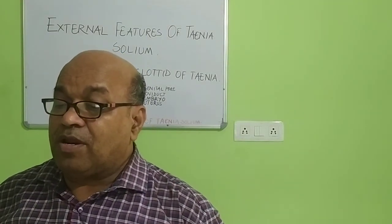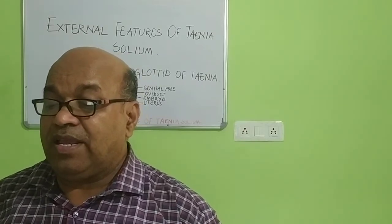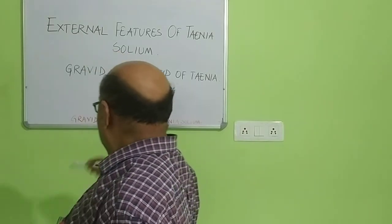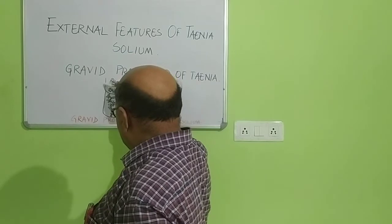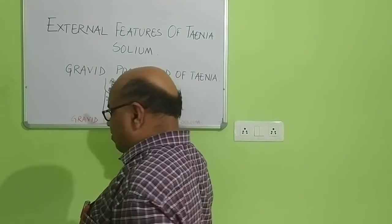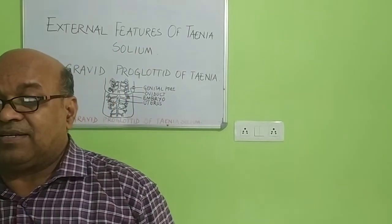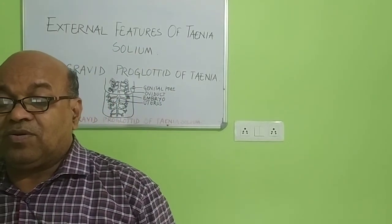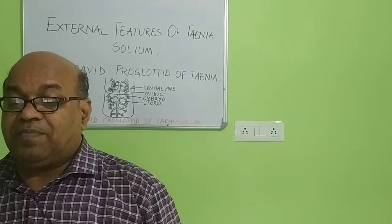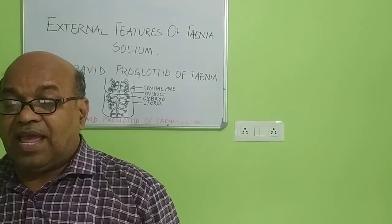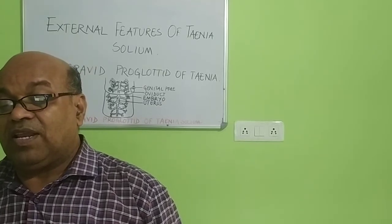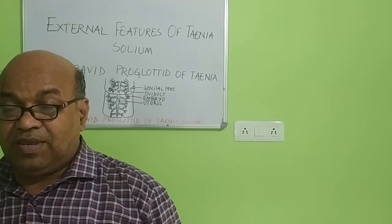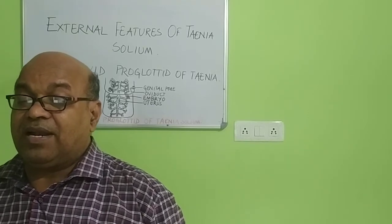The outermost covering is the cuticle. In case of the platyhelminthes, the cuticle is thicker. If you want to register different activities like temperature, as well as drops and chemicals, that covering — the cuticle — is also thicker in this case.